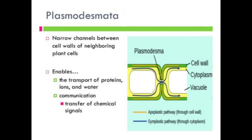Basically, first of all we know about what is Plasmodesmata. The Plasmodesmata are cytoplasmic strands that extend to the pores in adjacent cell walls. The protoplasts of the adjoining cells are not completely separated by the cell walls. The protoplasts of adjoining cells are connected by fine strands and these strands pass through pores and form Plasmodesmata.